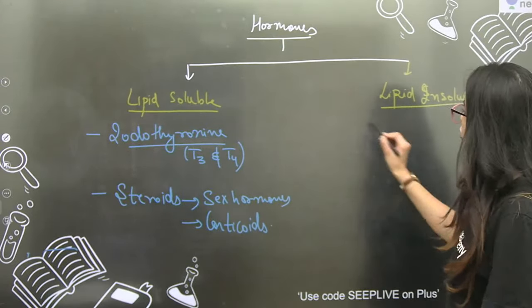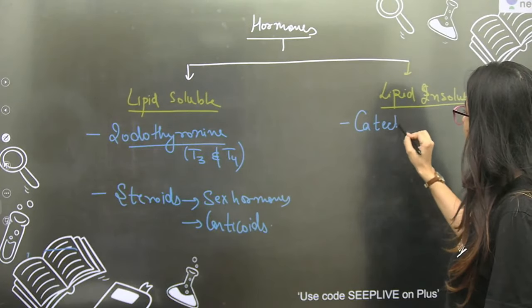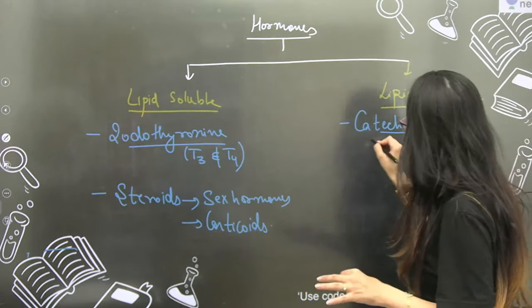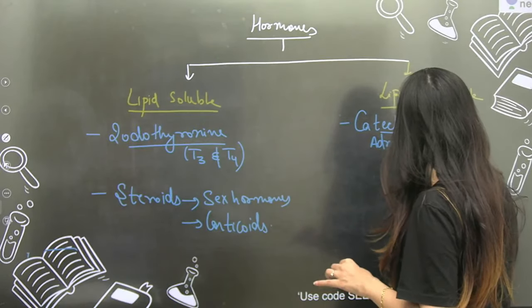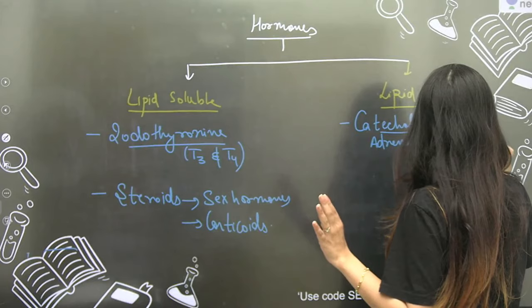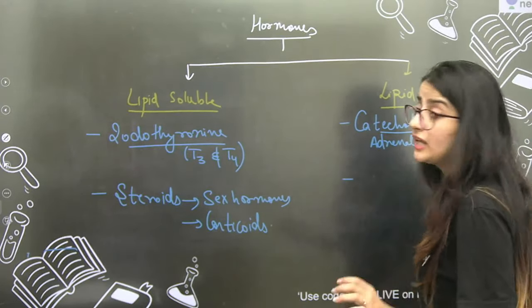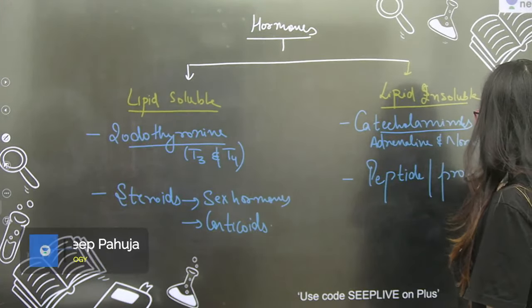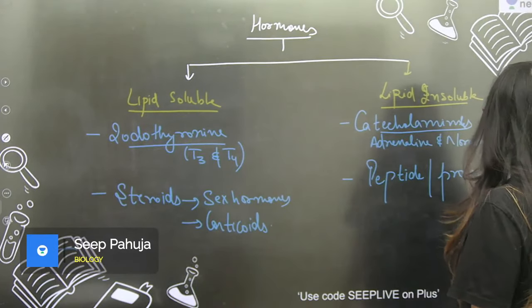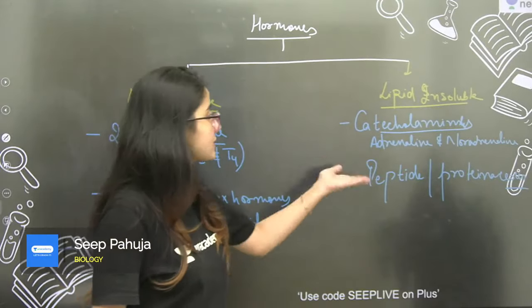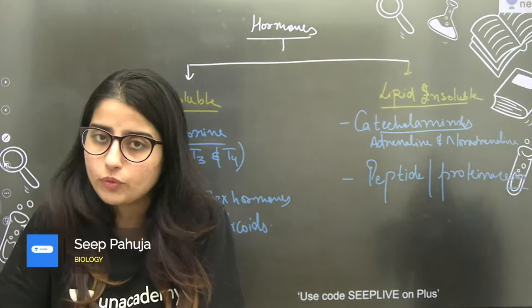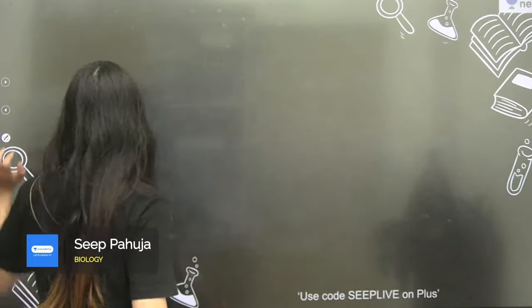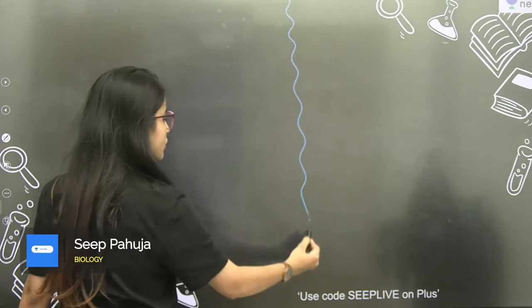Then comes lipid insoluble. Lipid insoluble includes catecholamines, which are biogenic amines - that is adrenaline and noradrenaline. Until you know this classification, you cannot understand the mechanism. Next come the major hormones which are peptide hormones, proteinaceous hormones. Many hormones like pituitary hormones, hypothalamus hormones, pancreas hormones - all these are peptide or proteinaceous hormones. Both have different mechanisms - lipid insoluble and lipid soluble work differently.